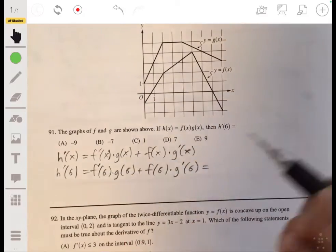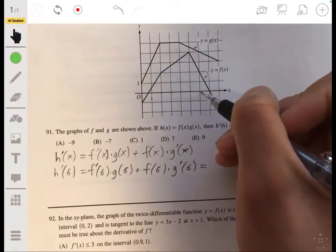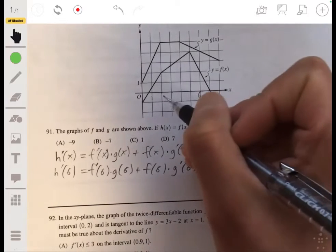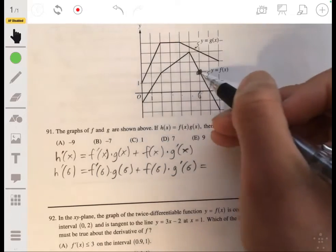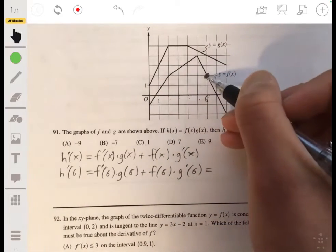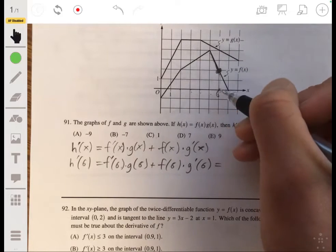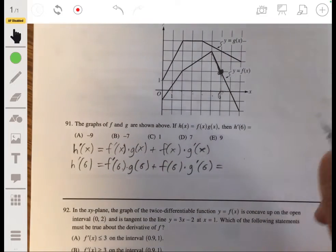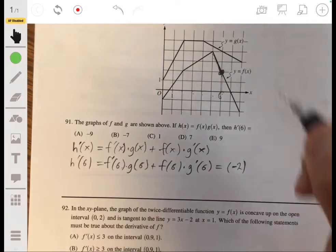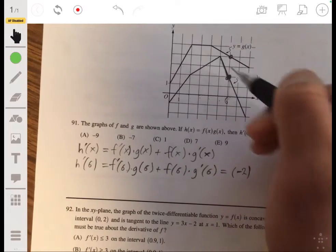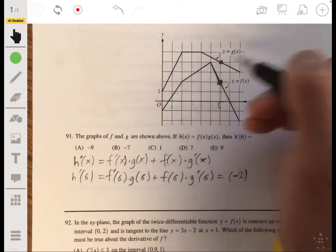So f prime of 6, we look at when x is 6, so 2, 3, 4, 5, 6. So this is 6. So f prime of 6. So we look at the slope of this line at this point, not the value. So the slope here going down 2 to the right one is negative 2. So this will be negative 2, g of 6. So here we actually look at the value. So 1, 2, 3, 4. The g of 6 would be 4.